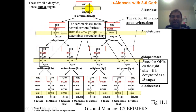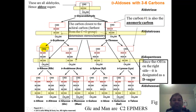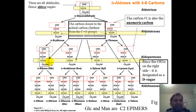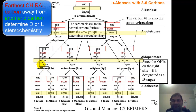In all aldoses, carbon number one serves as the anomeric carbon. The important point is that carbon one is the anomeric carbon for all aldose sugars. Now, the next point is stereochemistry. All sugars depicted here are D sugars, and stereochemistry is determined by the chiral carbon farthest away from the anomeric carbon.